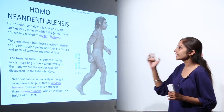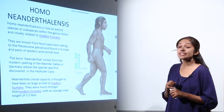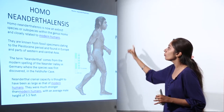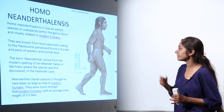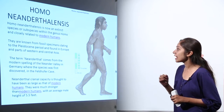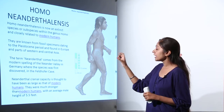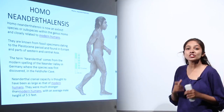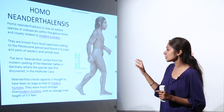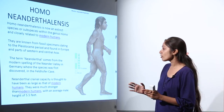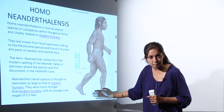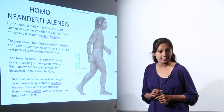Next we have Homo neanderthalensis, which is now an extinct species within the genus Homo and closely related to modern humans. They are known from fossil specimens dating to the Pleistocene period, found in Europe and parts of western and central Asia. The term 'Neanderthal' comes from the modern spelling of the Neander Valley in Germany, where the species was first discovered. Neanderthal cranial capacities are thought to have been as large as that of modern humans, and they were much stronger, with an average male height of 5.5 feet.